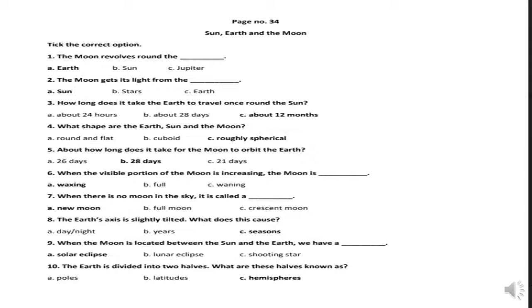Sixth: when the visible portion of the moon is increasing, the moon is dash. Options are waxing, full, waning. Your correct answer is waxing. When the visible portion of the moon is increasing, the moon is waxing.